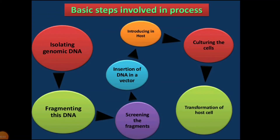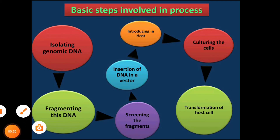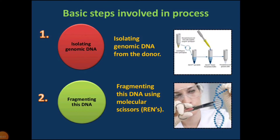The basic principles of recombinant DNA technology involve these basic steps: generation of DNA fragments and selection of the desired piece of DNA; insertion of the selected DNA into a cloning vector — the plasmid — to create the recombinant DNA; introduction of the recombinant vectors into the host cell; multiplication and selection of clones containing the recombinant molecules; and expression of the gene to produce the desired product. The first step is isolation of the genomic DNA.